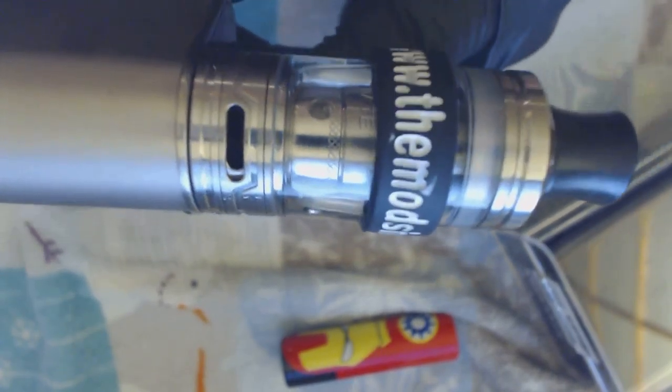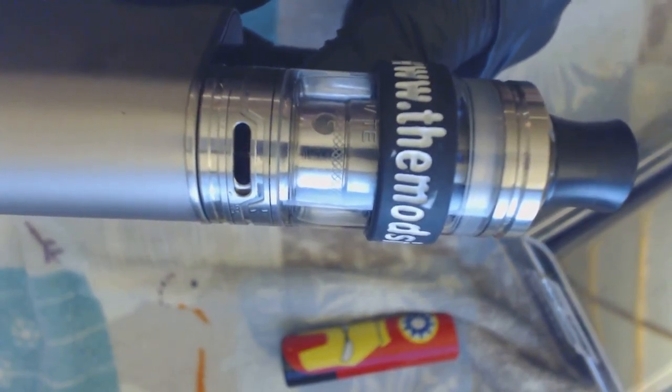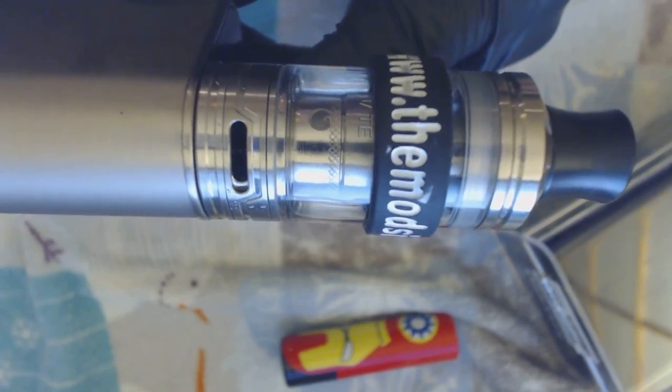It fits pretty flush on there at 25mm. So, anything bigger than that, if you have a Maxo V12 you want to slap on this guy, it's going to overhang a little bit. So, 25mm being its max point.